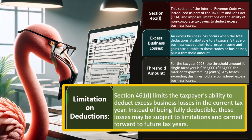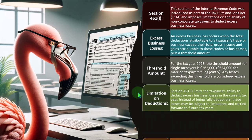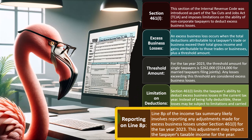This also becomes a political issue — you often hear people saying a person or corporation didn't pay any taxes, when what's really happening is they had a loss in a prior year and are taking those losses against current income. Section 461(I) limits the taxpayer's ability to deduct excess business losses in the current tax year. Instead of being fully deductible, these losses may be carried forward to future tax years, and the adjustment on Line 8P may impact the taxpayer's taxable income.